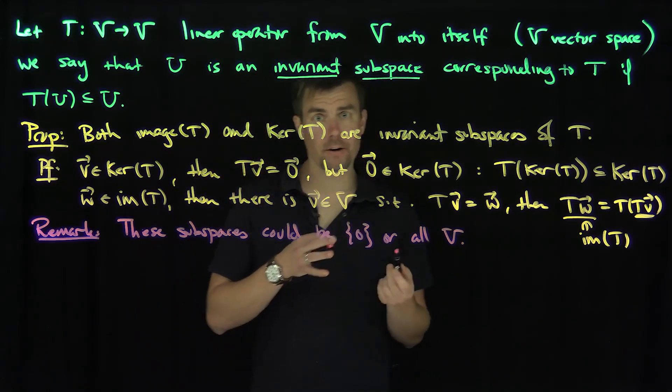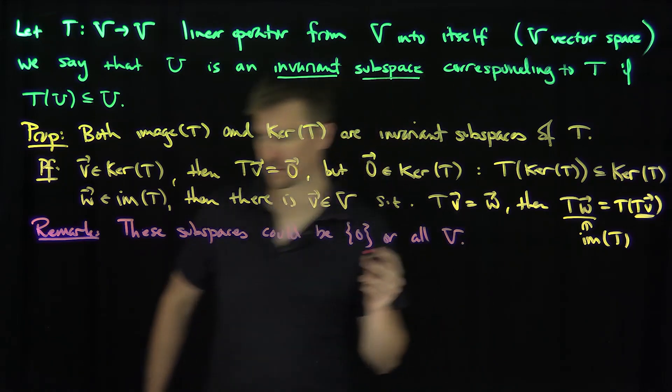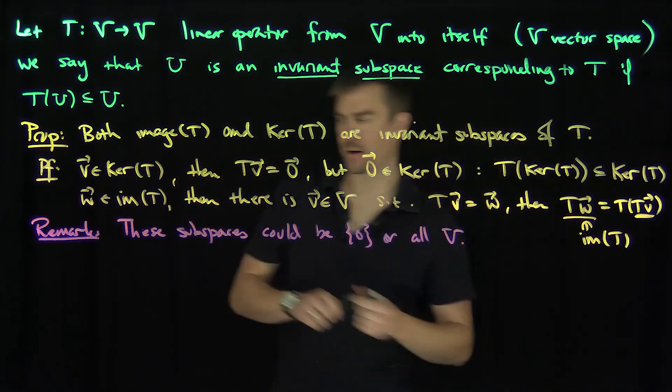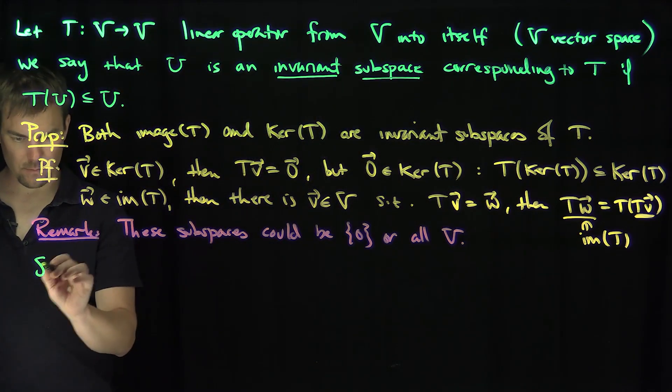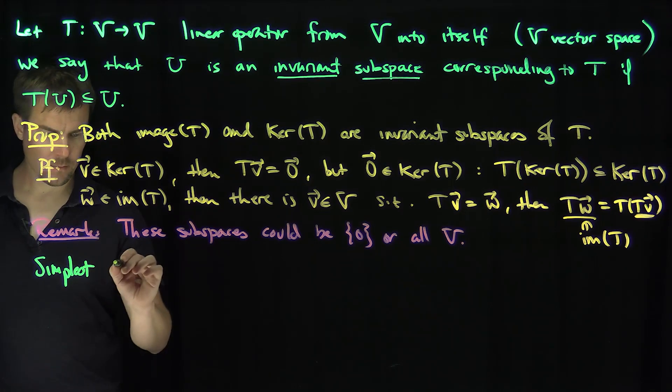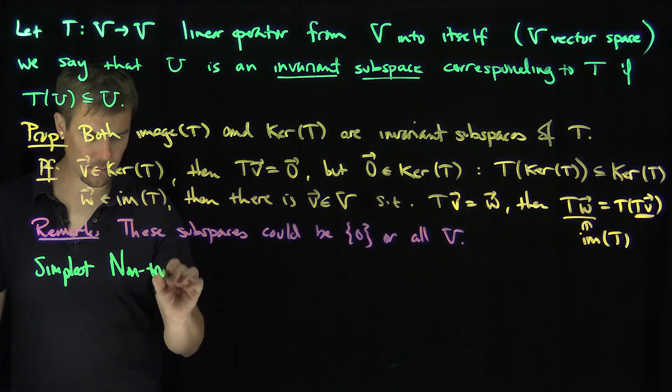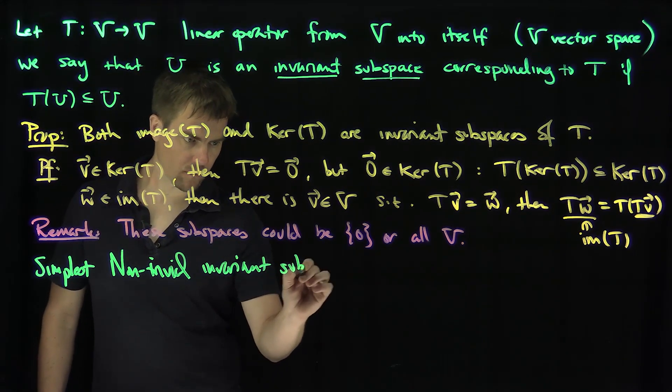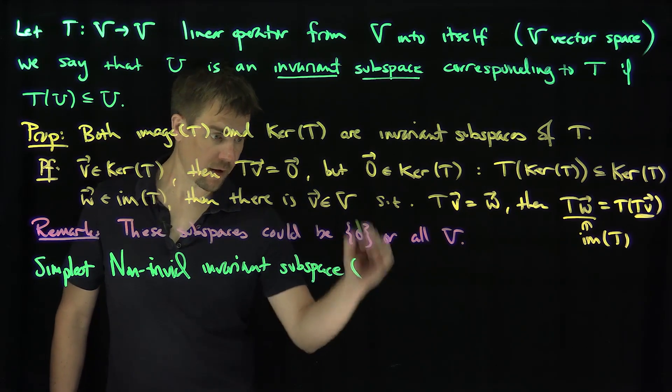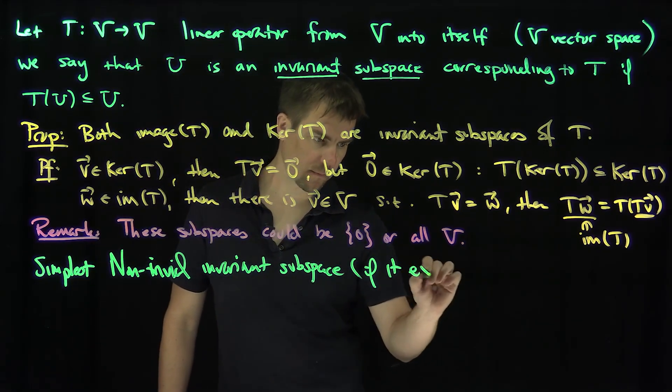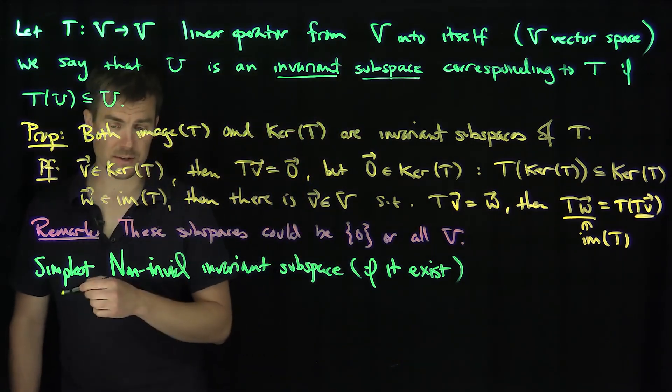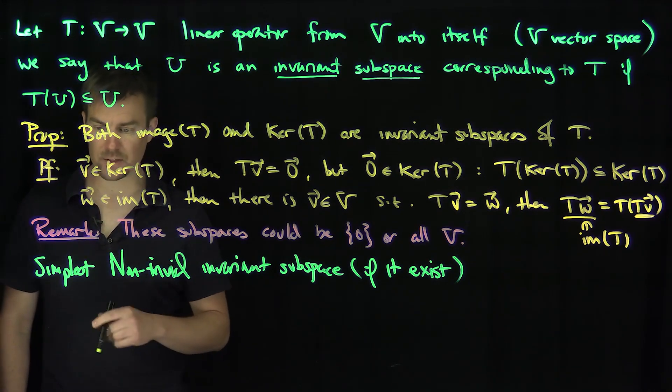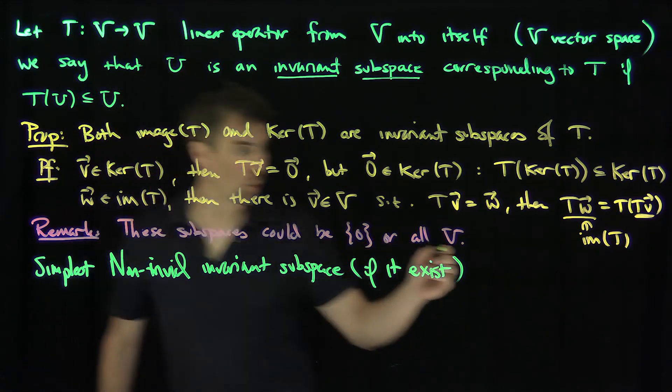So if I want to find a proper invariant subspace, a non-trivial invariant subspace, we can start with the simplest case. So what's the simplest case to consider? If it exists, of course, it's actually a deep result to prove that invariant subspaces exist. It's a result of invariance flow that these things do exist under some very mild, under some regular conditions on a Banach space.